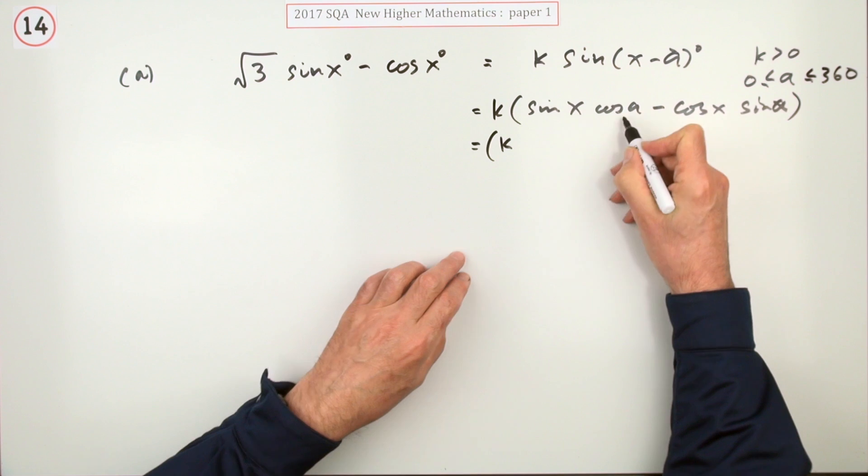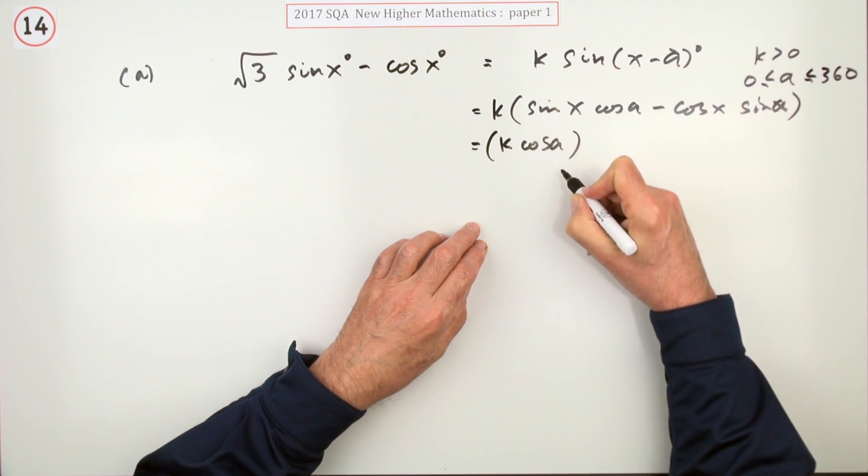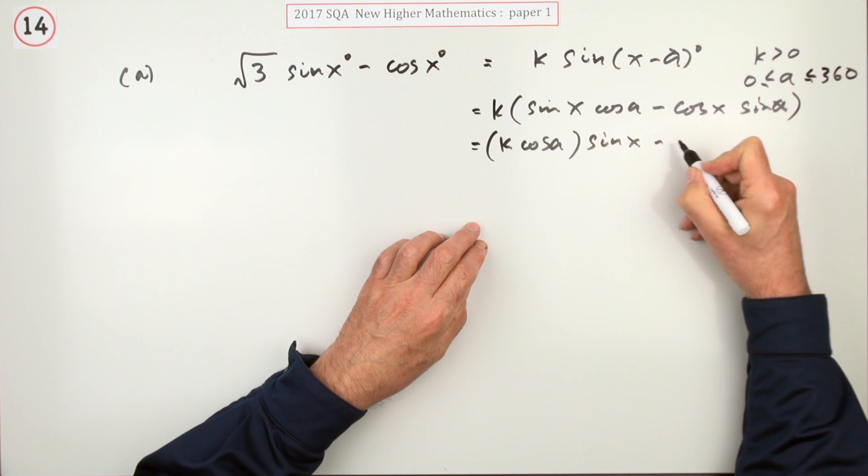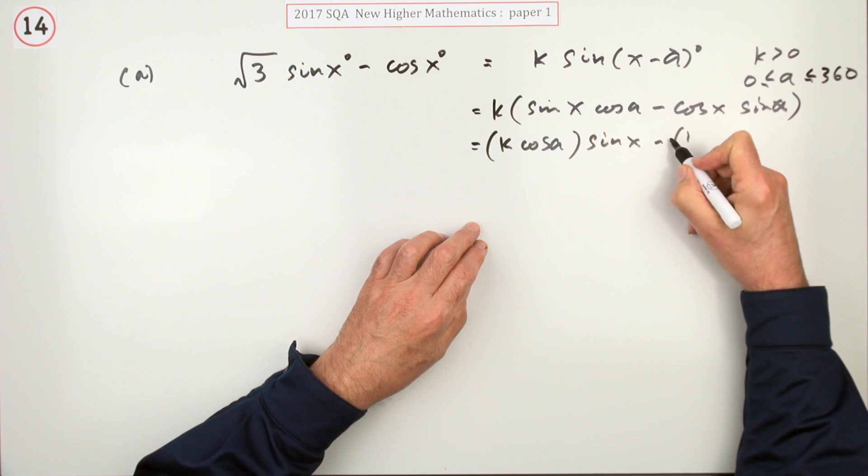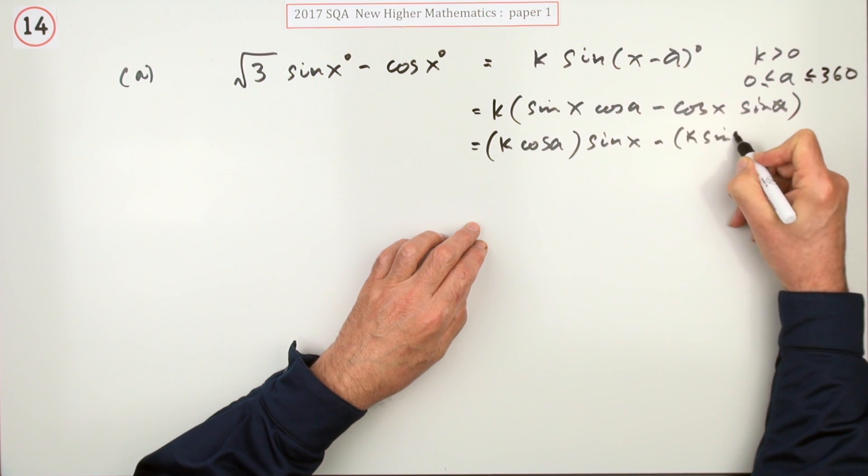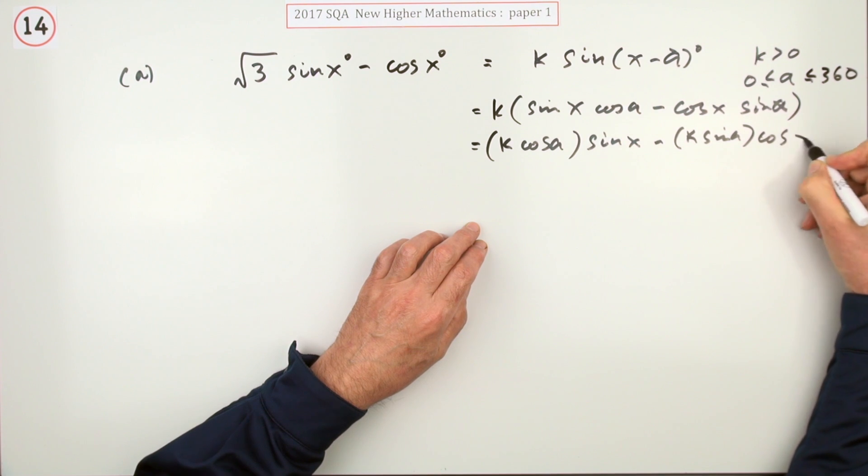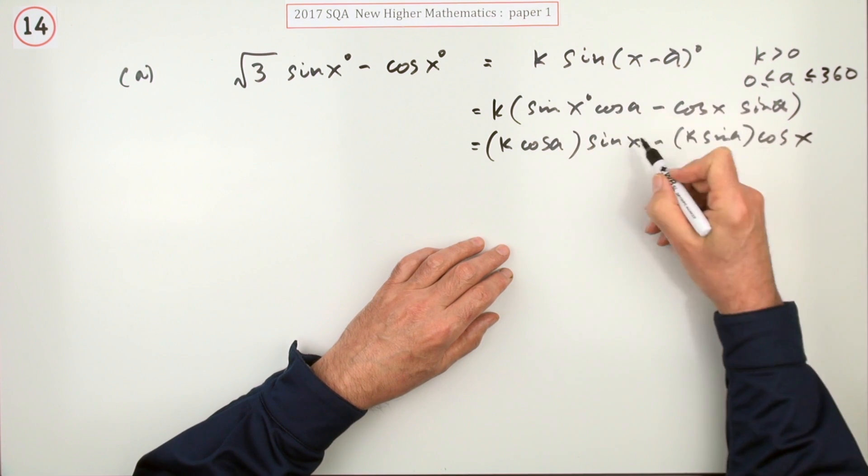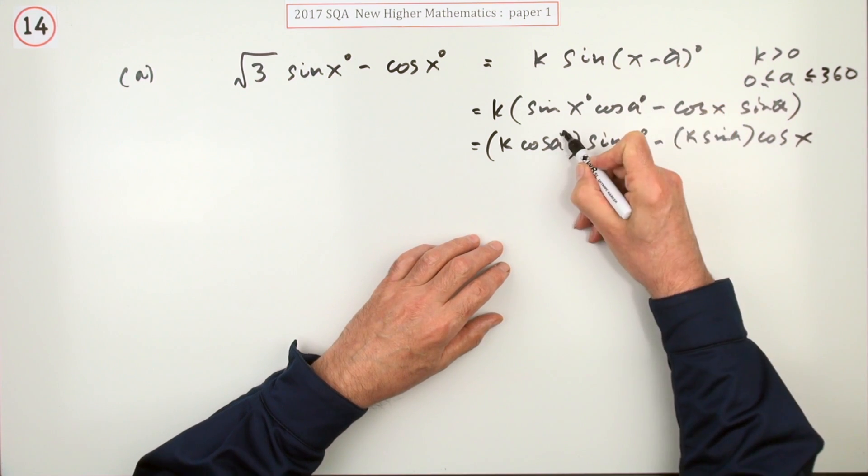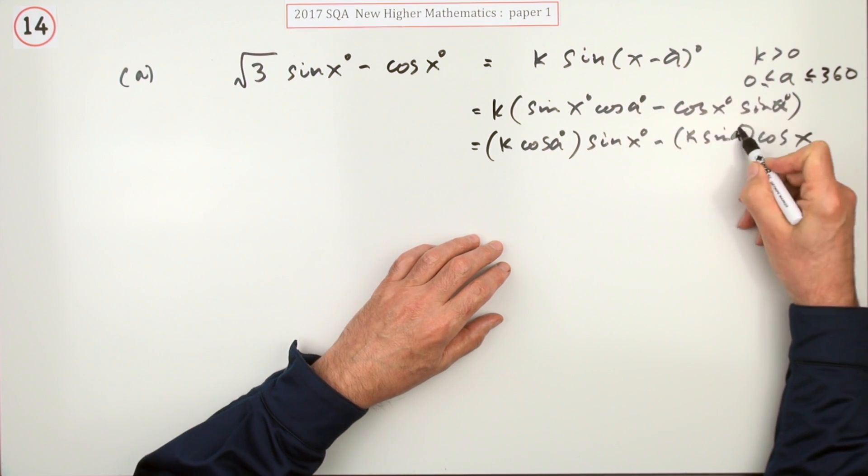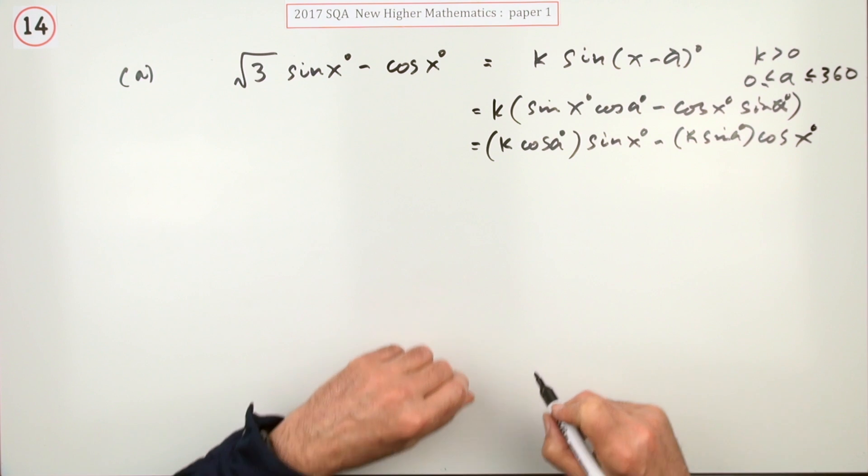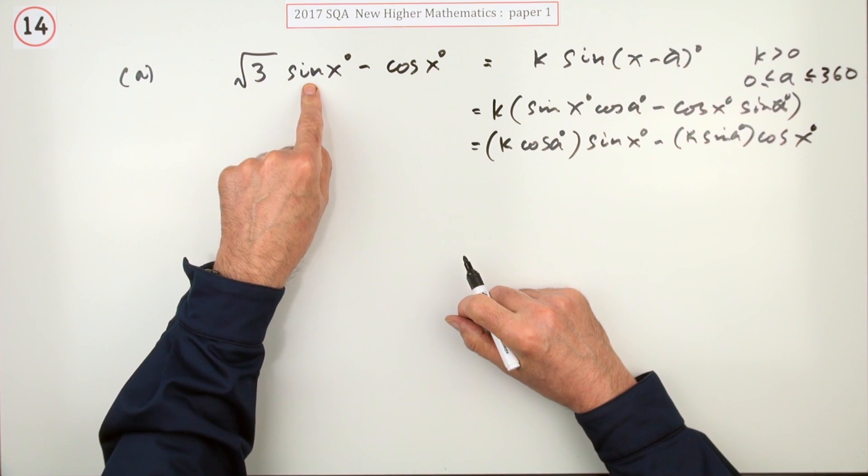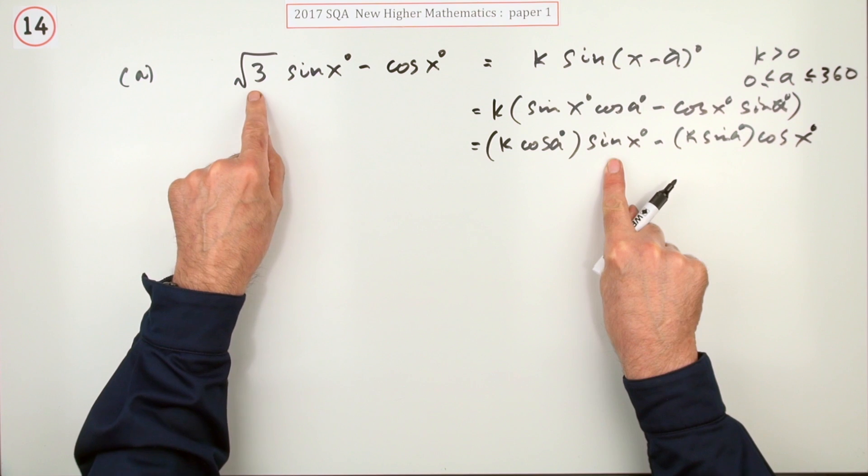So that's k times, and when you expand the sine of a difference, it's sine x cos a minus cos x sine a. I'll just rewrite that to show the coefficient quite clearly, so it's k cos a lots of sine x minus, and it'll be k sin a lots of cos x.